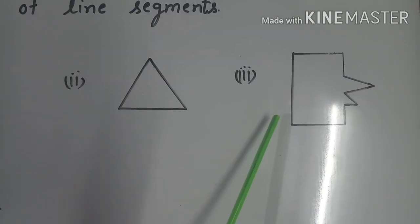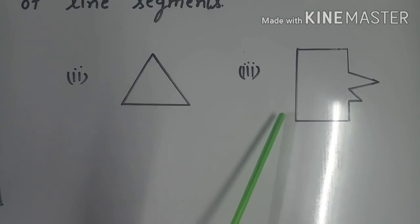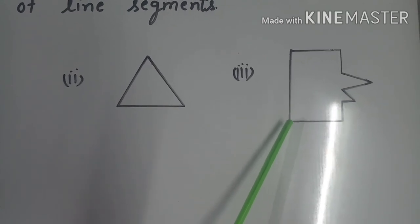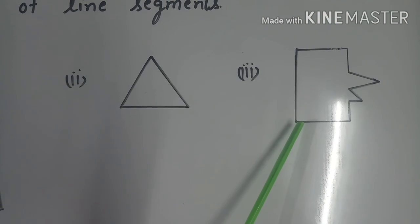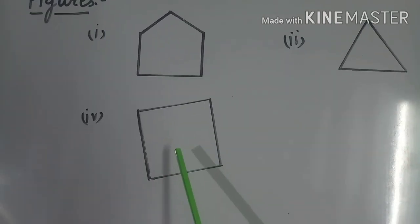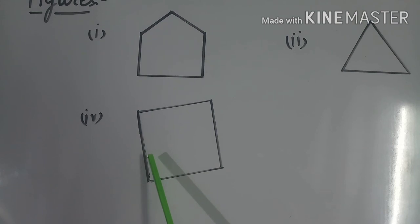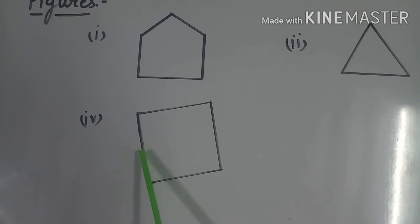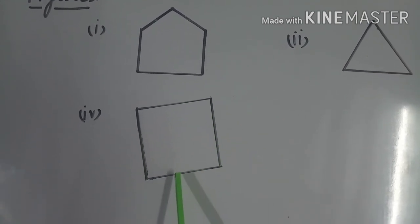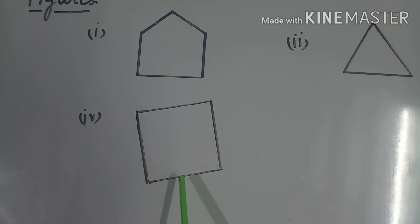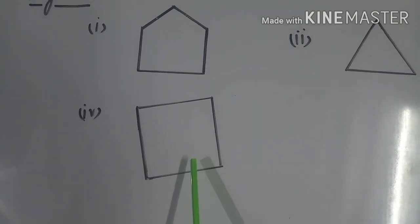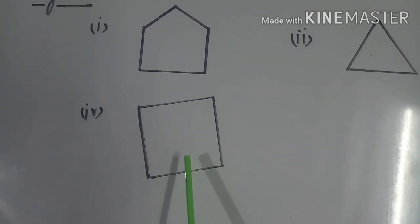Similarly, the third figure is also a closed figure made of line segments, so we call it a polygon. The fourth figure has 4 line segments — 1, 2, 3, 4 — and these 4 line segments join together to form a closed figure. Therefore, this is also called a polygon.